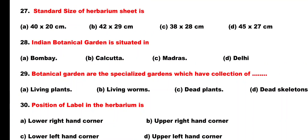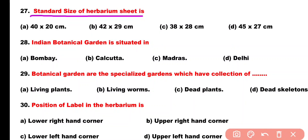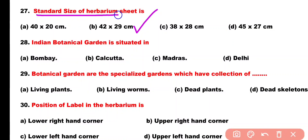Question number 27. Standard size of herbarium sheet is: Option A: 40 x 20 cm, Option B: 42 x 29 cm, Option C: 38 x 28 cm, Option D: 45 x 27 cm. Correct answer is Option B. The standard size of a herbarium sheet is 42 x 29 cm.